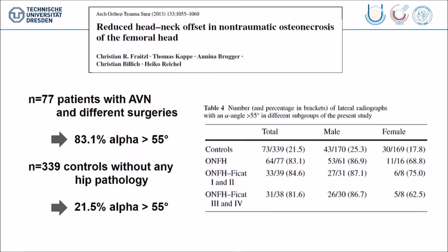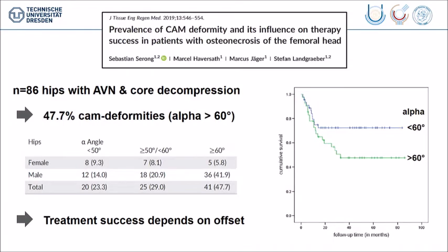The first, to my knowledge, to describe the association between impingement and avascular necrosis is Christian Freitschel. He reviewed a group of 77 patients with avascular necrosis and found an incidence of 83% with a high alpha angle, while in a control group the incidence of elevated alpha angle was significantly lower. Another group from Germany, Stefan Landgraber, found a high incidence of cam deformities in their necrosis group and said that when you do not address the deformity, you will have worse survival than when you correct the cam along with core decompression.